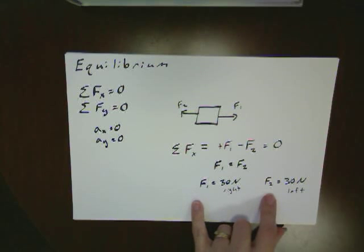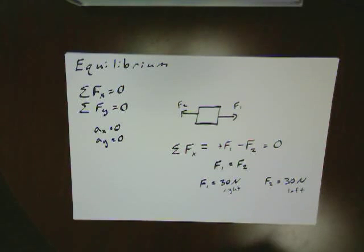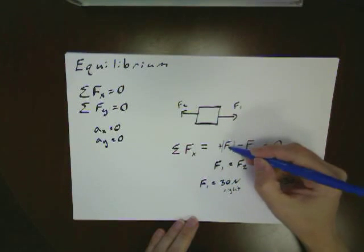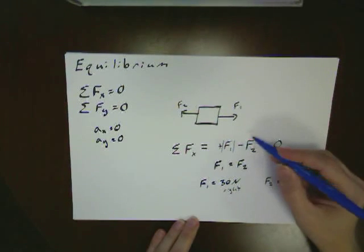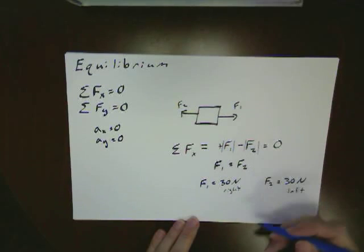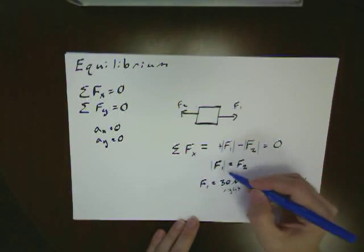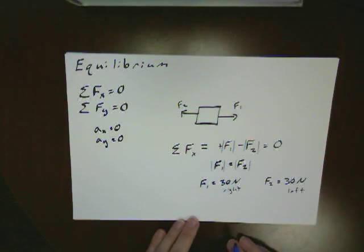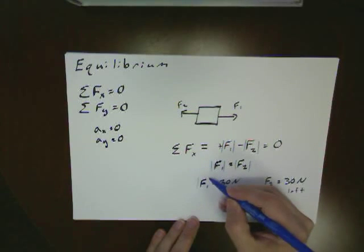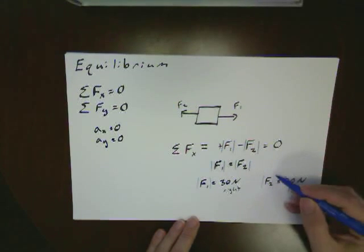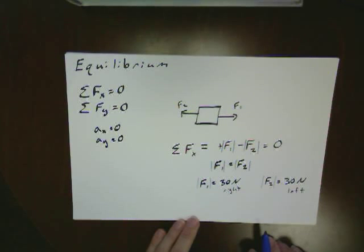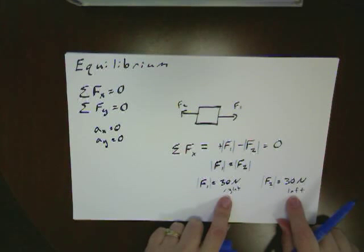Now if I were going to go through and properly put all of my symbols in here, I would probably want to go through and say plus the magnitude of F1 minus the magnitude of F2, which means the magnitude of F1 is equal to the magnitude of F2. The magnitude of F1 is 30, the magnitude of F2 is 30, and the left right tells us our directions.